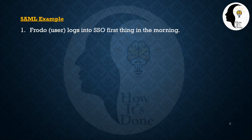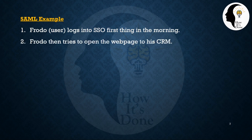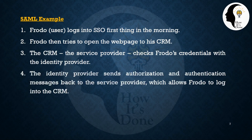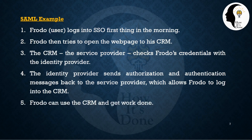For example, a user named Frodo logs into SSO in the morning and then tries to open a web page to his CRM. The CRM, acting as the service provider, checks Frodo's credentials with the identity provider. The identity provider sends an authorization and authentication message back to the service provider, which allows Frodo to log into the CRM and get his work done.